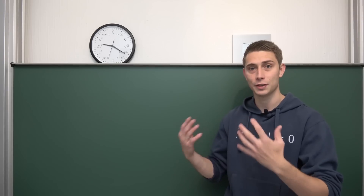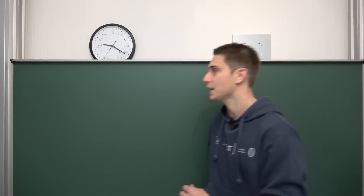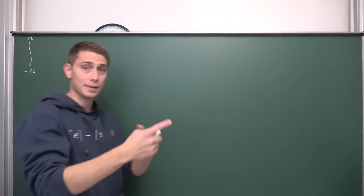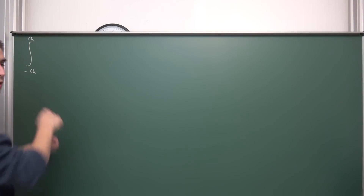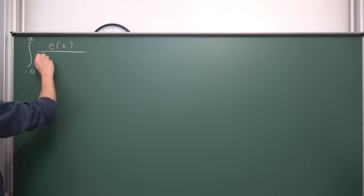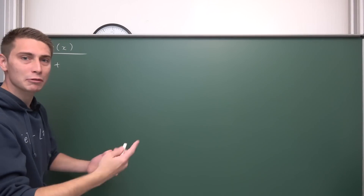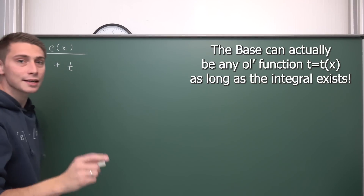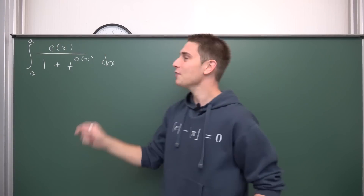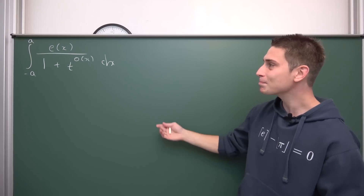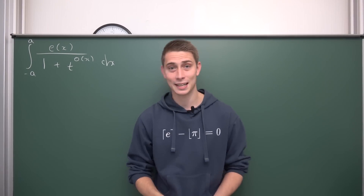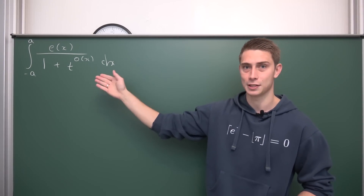So what's the integral, or the type of integral — the family of integrals — that we are going to deal with today? Well, they are of the form: integral from negative a to a. So we are dealing with a symmetric integral. We are integrating over symmetric boundaries and we are going to have a function e of x up here divided by 1 plus, and now we are going to have some base — really doesn't matter, let's call it t — to the o of x power. This looks really weird. We have two weird functions here and we have some t as a base. We are going to talk about this today and there are actually so many integrals that are of this form.